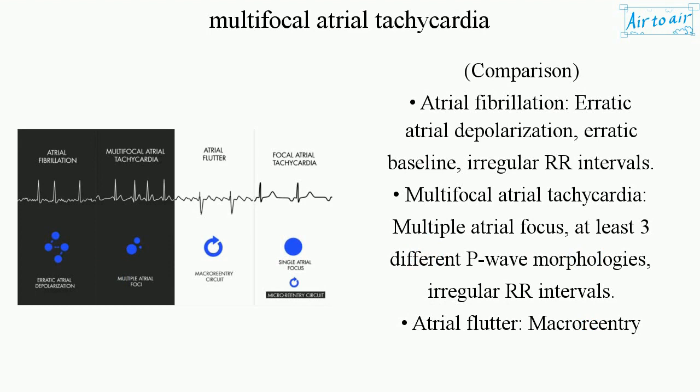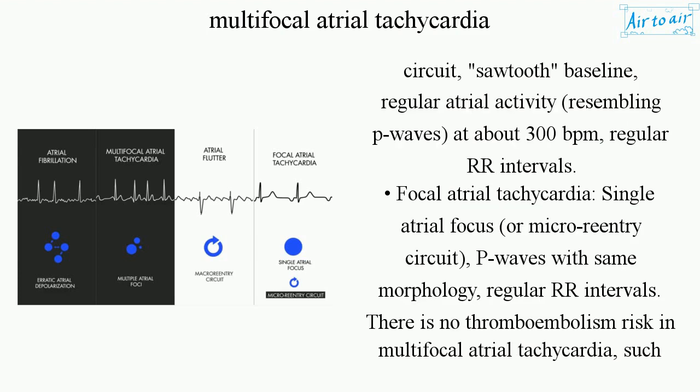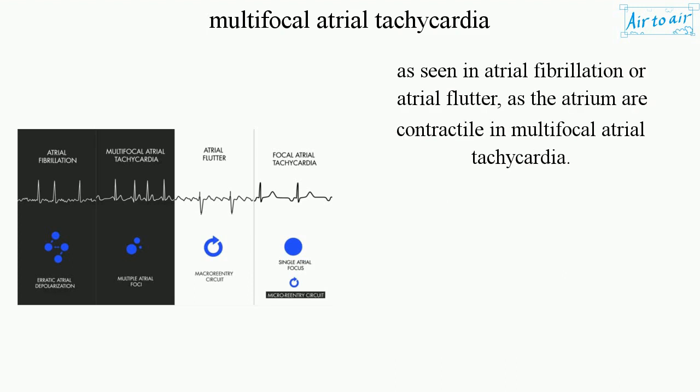Comparison: Atrial fibrillation shows erratic atrial depolarization, erratic baseline, and irregular RR intervals. Multifocal atrial tachycardia has multiple atrial foci with at least three different P-wave morphologies and irregular RR intervals. Atrial flutter involves a macro reentry circuit with a sawtooth baseline and regular atrial activity resembling P-waves at about 300 BPM with regular RR intervals. Focal atrial tachycardia has a single atrial focus or micro reentry circuit with P-waves of the same morphology and regular RR intervals. There is no thromboembolism risk in multifocal atrial tachycardia, unlike atrial fibrillation or atrial flutter, as the atria are contractile in multifocal atrial tachycardia.